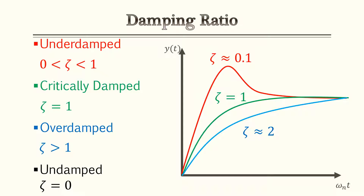Underdamped is when you drop that pebble in the pond and there are an excess number of waves — it takes longer to level off. That's when zeta is less than one but greater than zero. Critically damped, shown in green, is the ideal design — it levels out almost instantaneously with a nice perfect wave. Overdamped is like dropping the pebble into concrete — you've narrowed the bandwidth more than necessary. Undamped is when zeta equals zero, meaning the waves go on forever and never steady off.